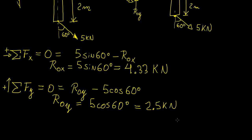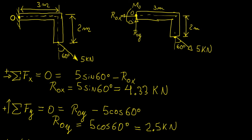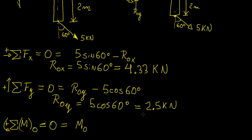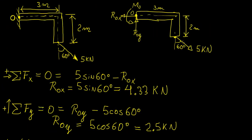Now the last thing we need to find is the bending moment reaction. So for that we're going to take the sum of the moments about point O. And let's assume that this direction is positive. Okay so now the first thing we have is our bending moment reaction Mo.